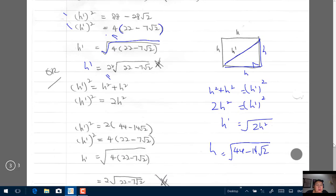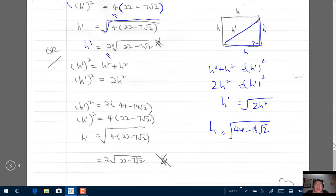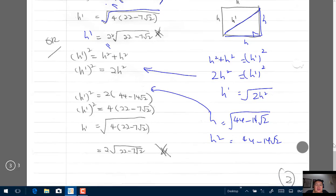So I have h1 squared equals h squared, so h1 is the square root. I substitute h inside here, so h squared will be, removing the root sign, 44 minus 14 root 2. So h1 squared will be 2 bracket 44 minus 14 root 2.